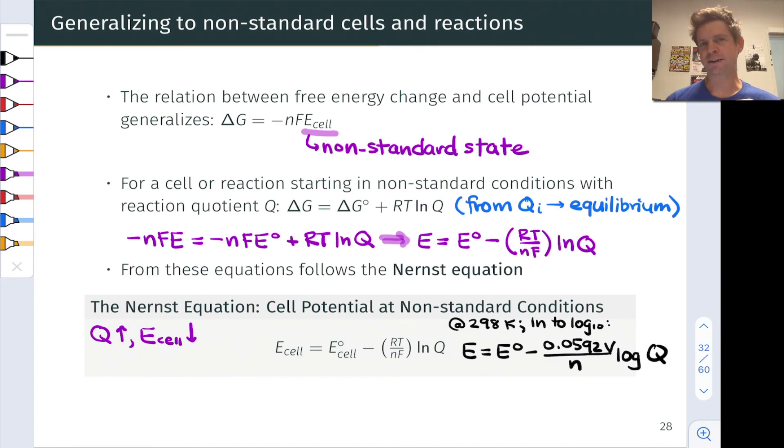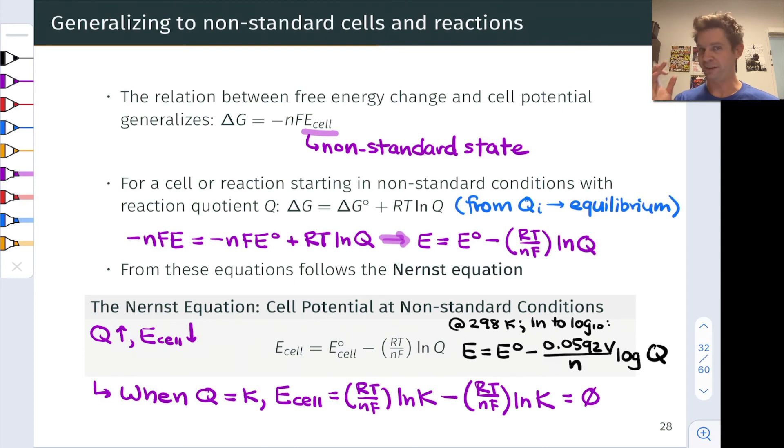One more thing we should think about here with the Nernst equation is what happens when the value of the reaction quotient is equal to K the equilibrium constant. Well in that case the cell potential becomes the standard cell potential which we've already seen is equal to RT divided by NF times the natural log of K minus a term due to the value of Q which is equal to K RT divided by NF times the natural log of K.